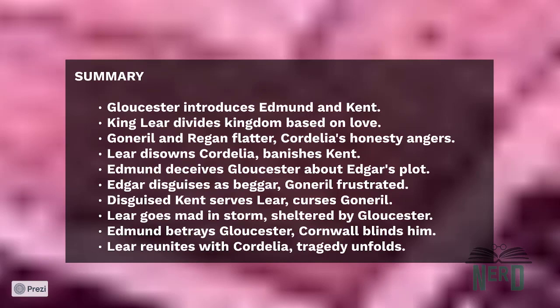Goneril, Duchess of Albany, and Regan, Duchess of Cornwall, speak enthusiastically and earn their father's praise. But Cordelia, the youngest, says nothing because she cannot voice her deep love for Lear. Misunderstanding his daughter, Lear disowns and banishes her from the kingdom. He also banishes the Earl of Kent, who had taken Cordelia's side against the king. This action by the king divides the kingdom both figuratively and literally.